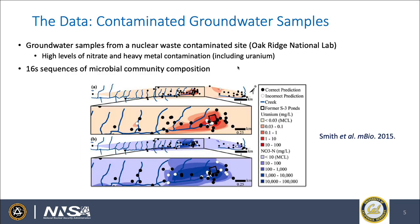The data that we are currently using are samples of contaminated groundwater from a nuclear waste contaminated site in Oak Ridge, Tennessee. This site has very high levels of nitrate and heavy metal contamination, including uranium contamination. We have collected 16S sequences of microbial community composition, and the original publication of this data is shown here.